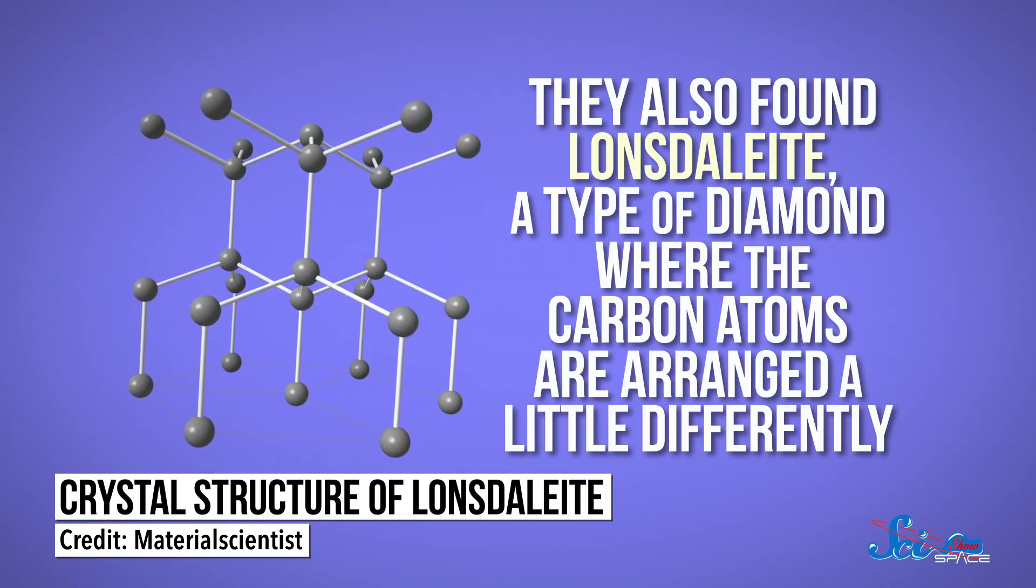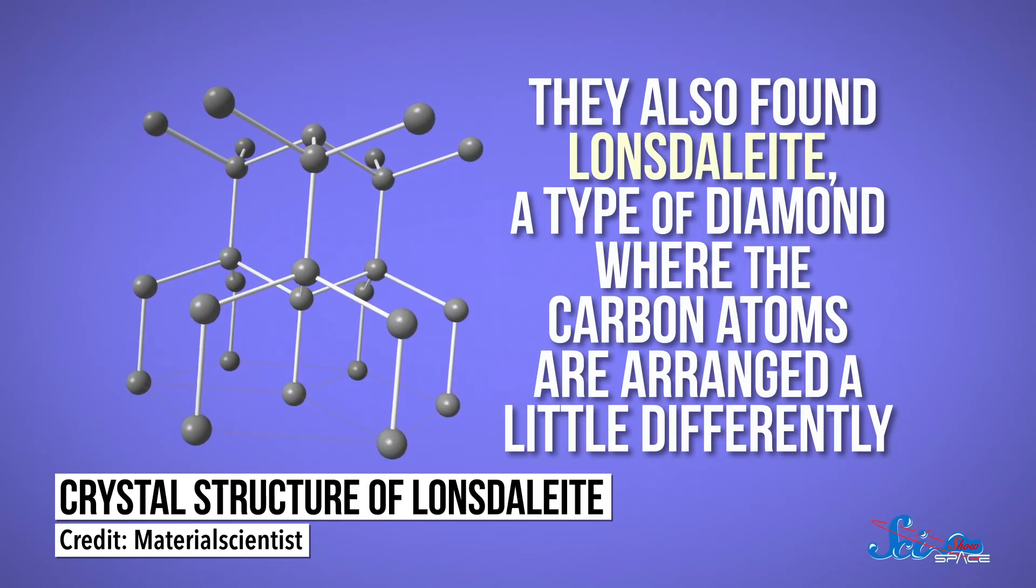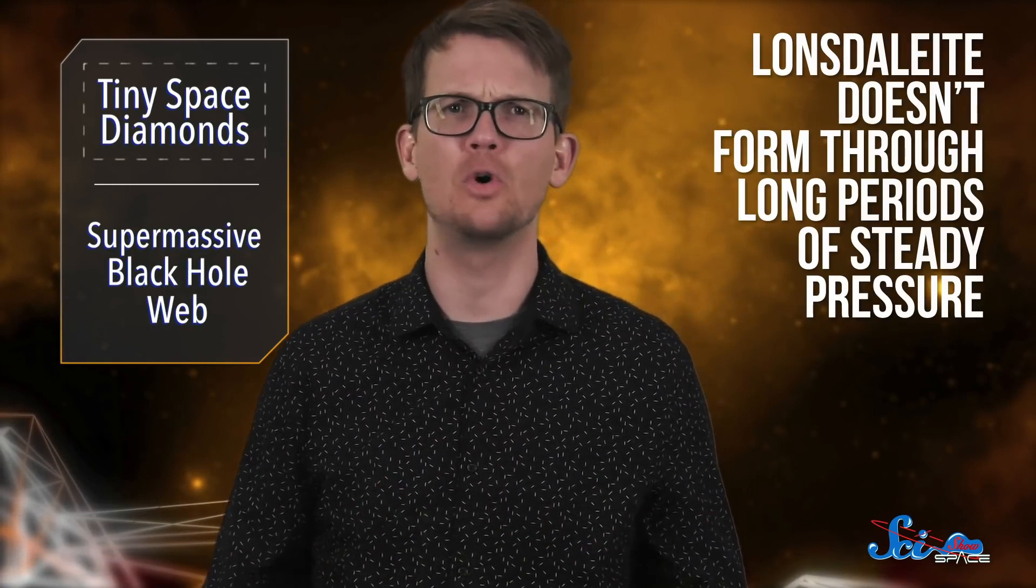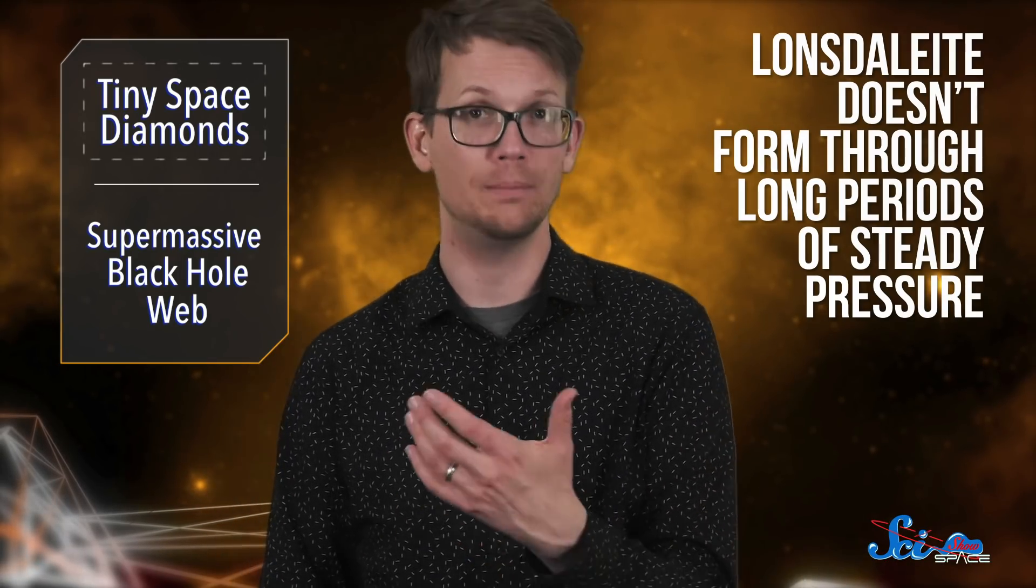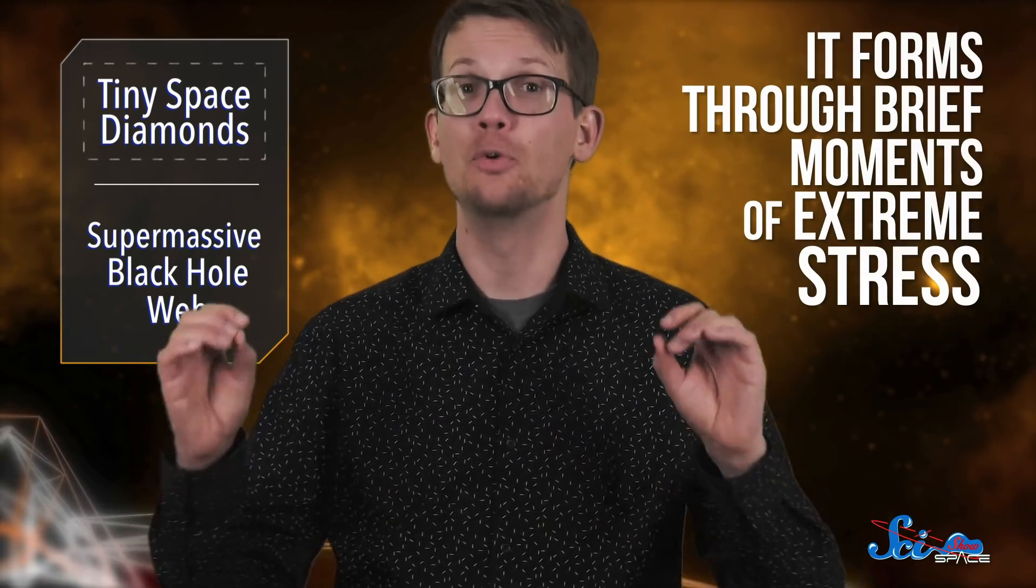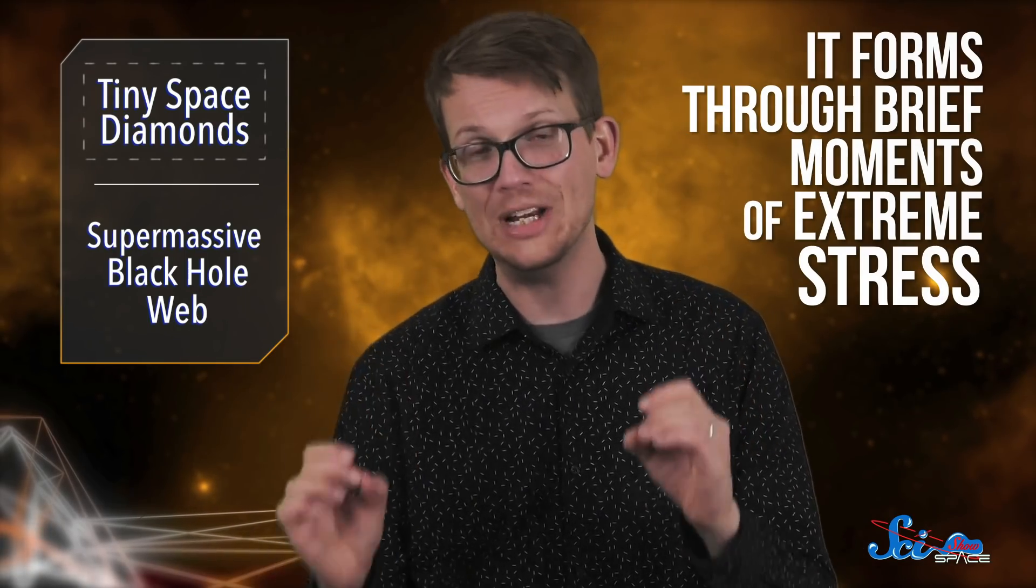But they also found lonsdalite, a type of diamond where the carbon atoms are arranged a little differently. And that's big news, because lonsdalite doesn't form through long periods of steady pressure, like you'd find in a protoplanet, it forms through brief moments of extreme stress.